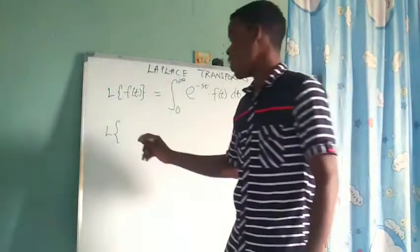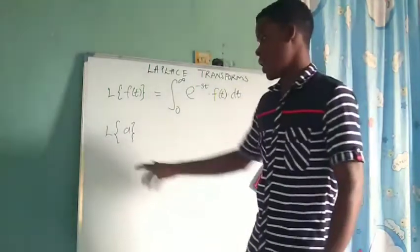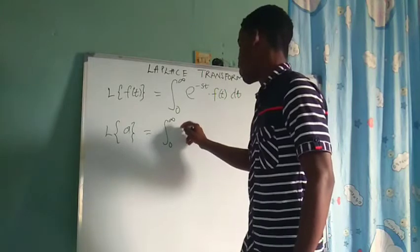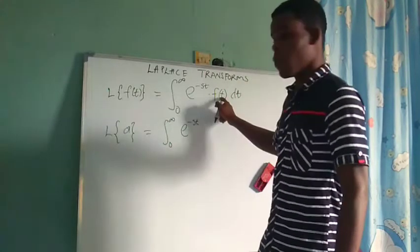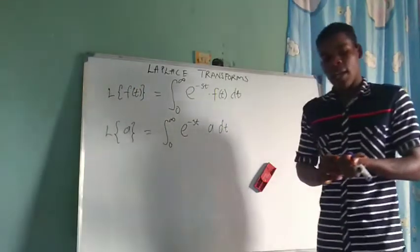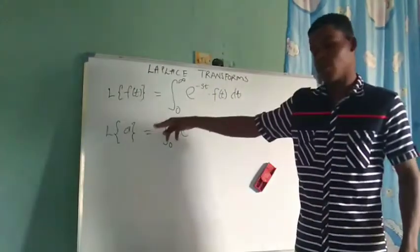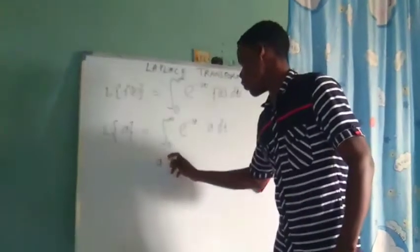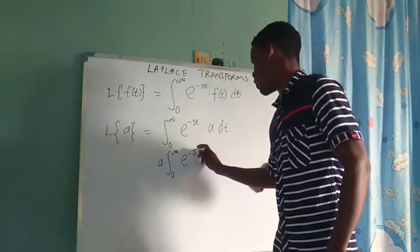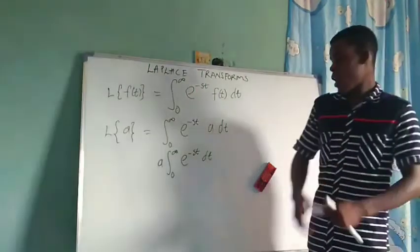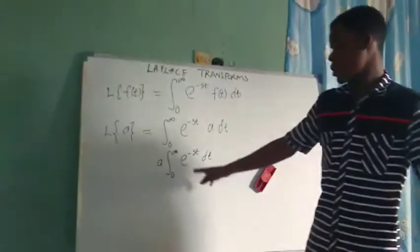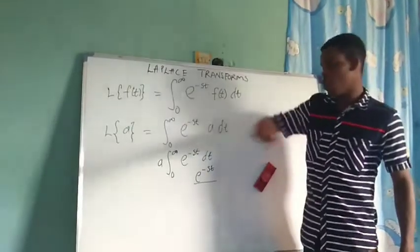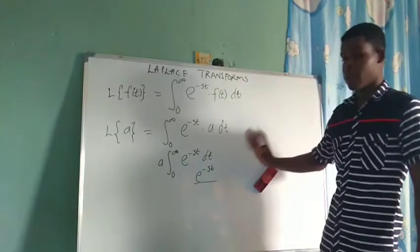We're going to take the Laplace transform of a constant function, let's say A. At this point the power of T is 0 — that is a constant function. We have it to be the integral from 0 to infinity of e^(−ST) times A dT. Since A is a constant, we can take it to the front of the integration sign: A times the integral from 0 to infinity of e^(−ST) dT.